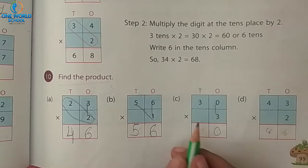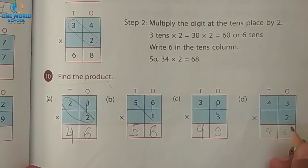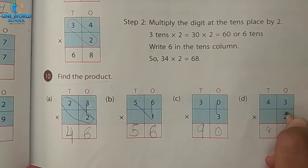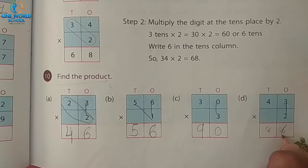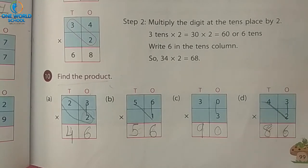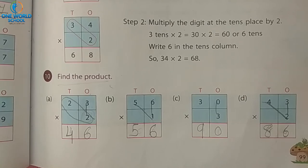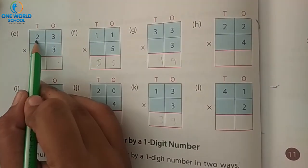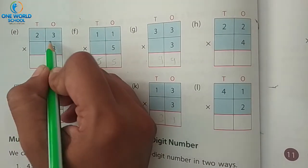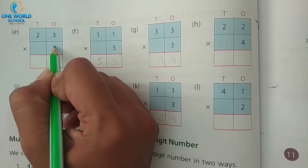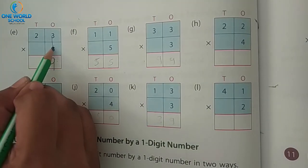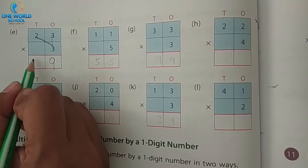Number D: again two digits. So two threes are six, and two fours are eight. Number E: twenty-three multiply by three. Which place will you take first? Ones place — three threes are nine. And now the tens place: three twos are six.